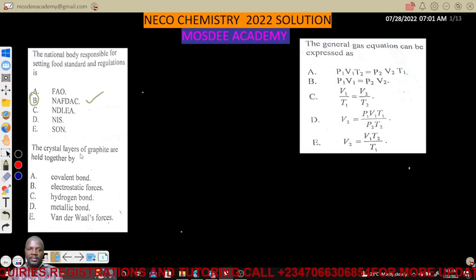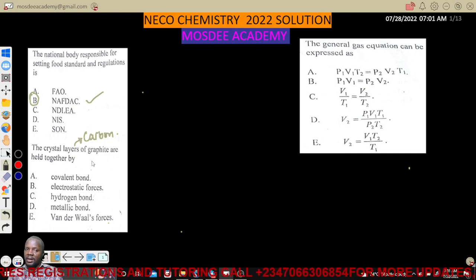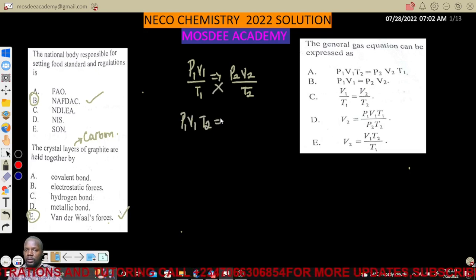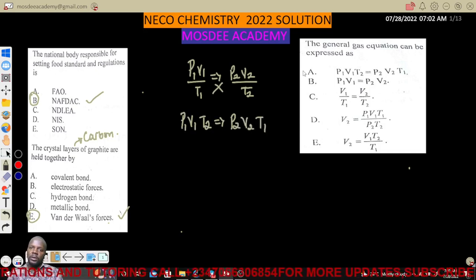Question 2: The crystal layers of graphite are held together by Van der Waals forces. Question 3: The general gas equation can be expressed as P1V1/T1 = P2V2/T2. The examiner checked your understanding by cross multiplication.